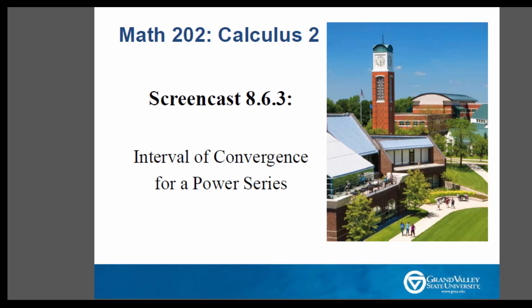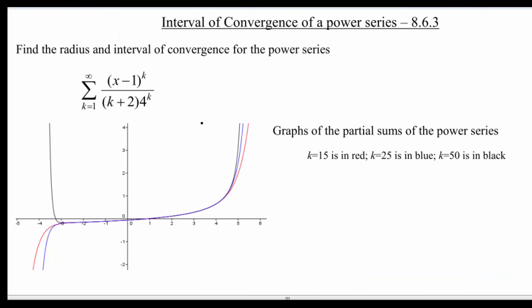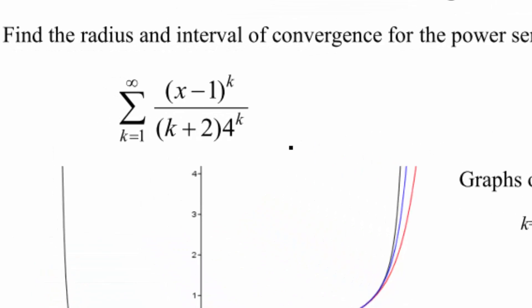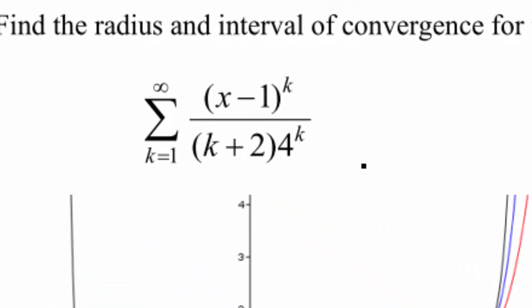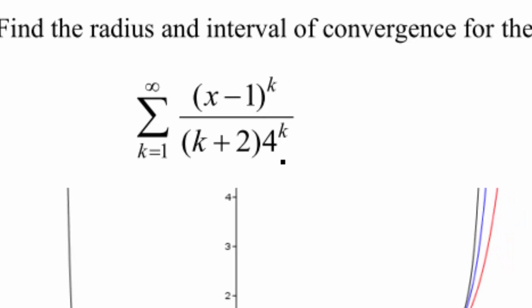Hello, and welcome to a screencast today about finding the interval of convergence for a power series. The power series we're going to look at today is the sum as k goes from 1 to infinity of x minus 1 to the k, divided by k plus 2 times 4 to the k. And that 4 to the k is in the denominator, just so you know.